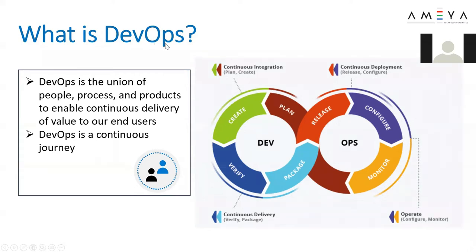DevOps is development with operations. In any project, you would see a developer saying: 'I have done my work and it's working on my local — here is my unit test proof, please take the build to production.' Then the operation team takes that code and deploys it in production or a staging environment, and immediately you'll hear: 'Things are not working.' There is always a fight between the development team and the operation team — everybody did their job but the application is not working. There is always a barrier between these two teams.